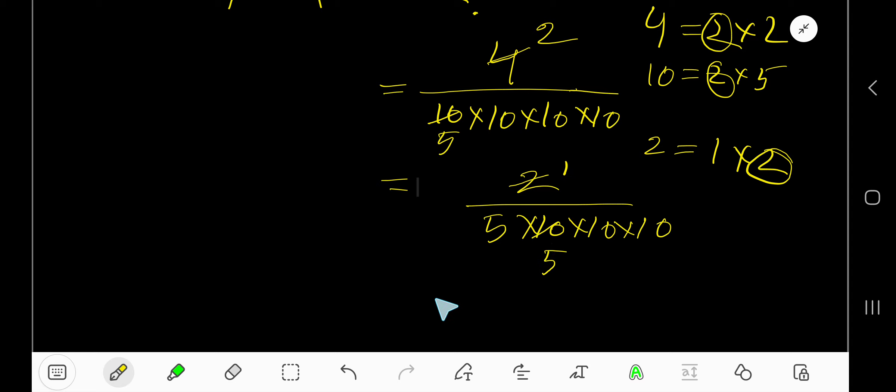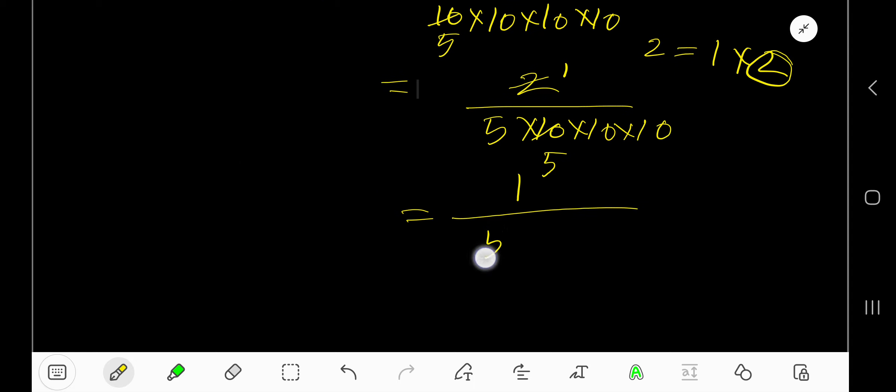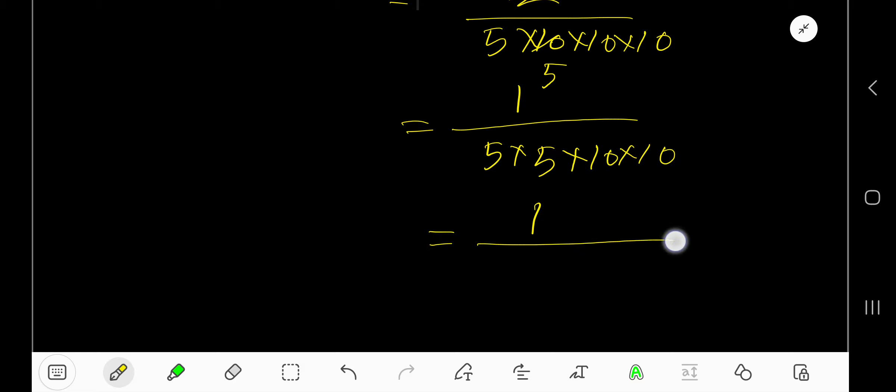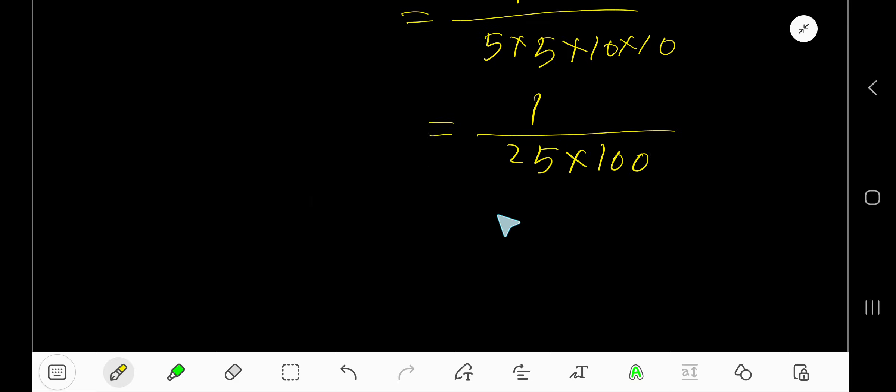So you get 1 over 5 times 5 times 10 times 10. Now, 5 times 5 is 25, and 10 times 10 is 100, so we have 1 over 25 times 100, which equals 1 over 2500. This is the answer.